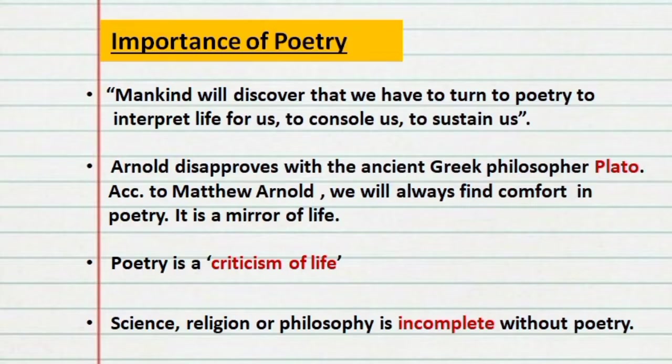Arnold starts by talking about the importance of poetry. He says mankind will discover that we have to turn to poetry to interpret life for us, to console us, to sustain us. He disagrees with the ancient Greek philosopher Plato, who had laid many accusations against poetry. For Arnold, poetry is a criticism of life — it depicts human nature and what we are, offering comfort like a mirror to our own lives. He argues that even science, religion, or philosophy is incomplete without poetry.